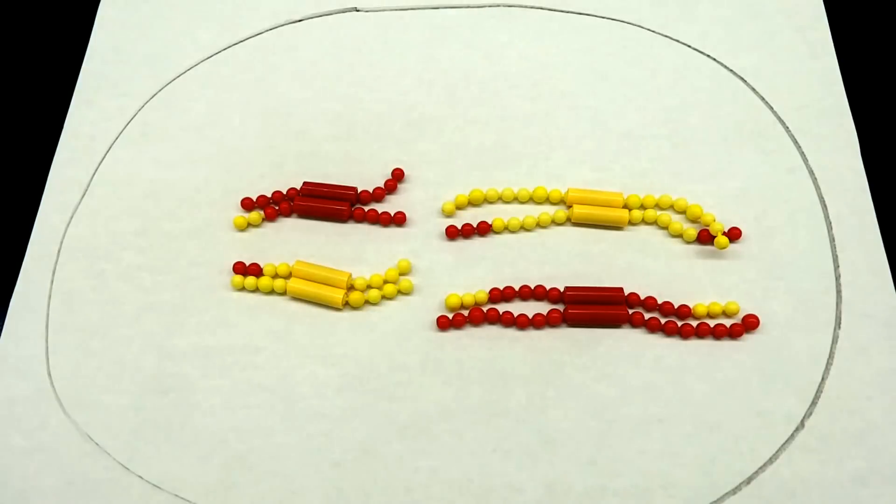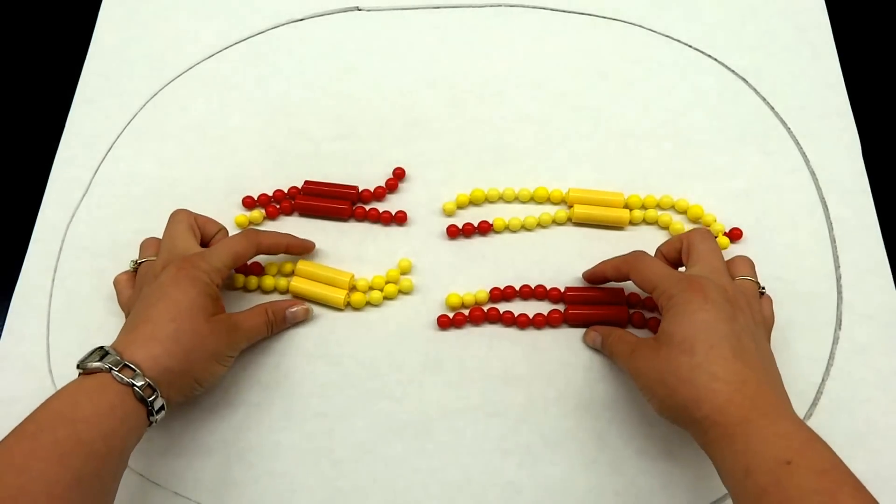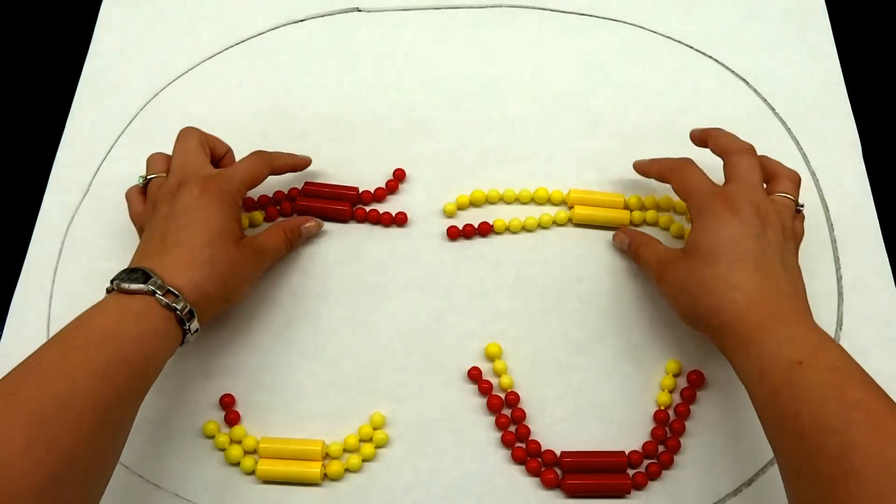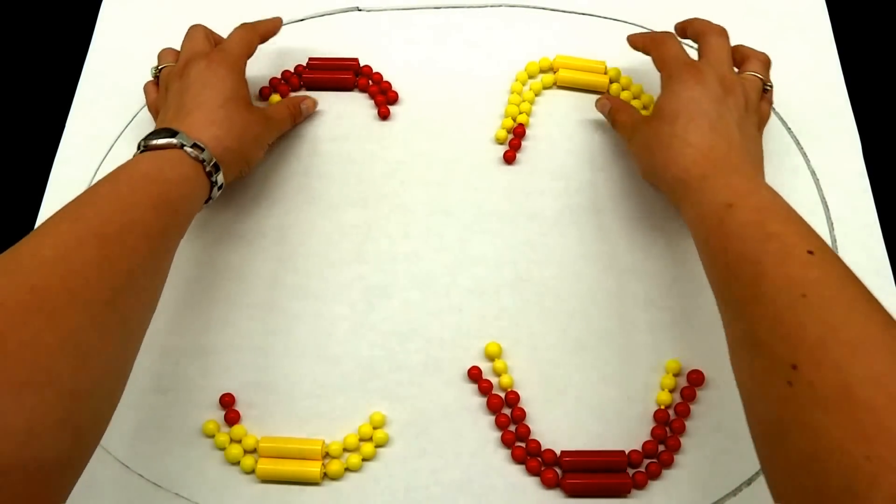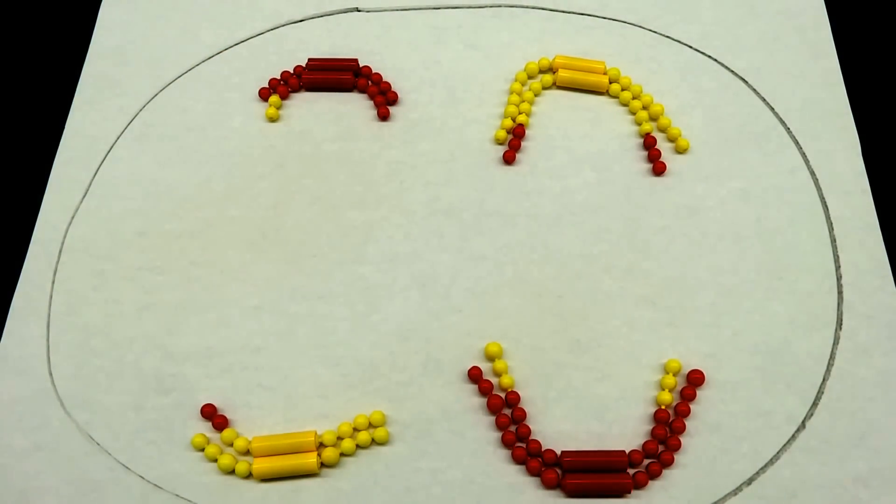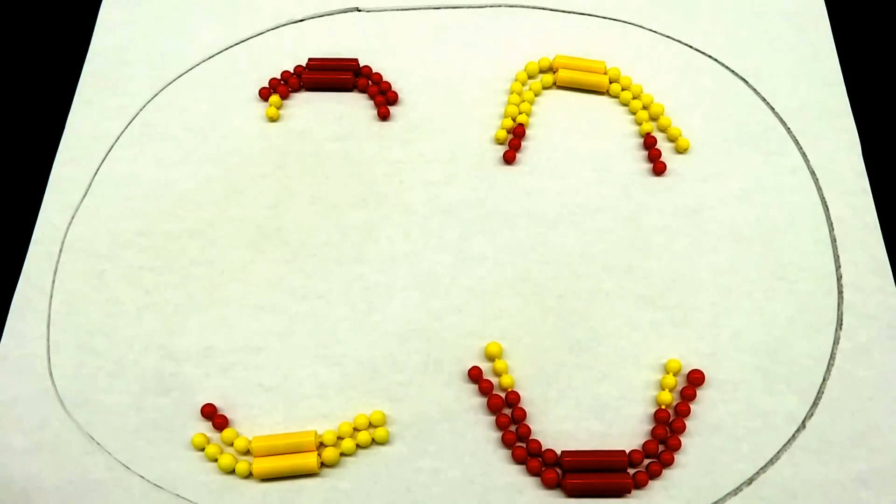Right now we're on either side of our metaphase plate and we're going to move into anaphase one. During anaphase we're going to see the tetrads separate from one another as they get pulled to the poles using the spindles, just like we see in mitosis. Right now here we are pulled apart in anaphase.